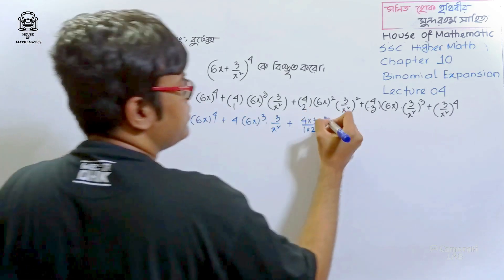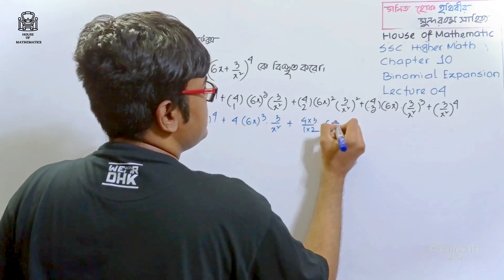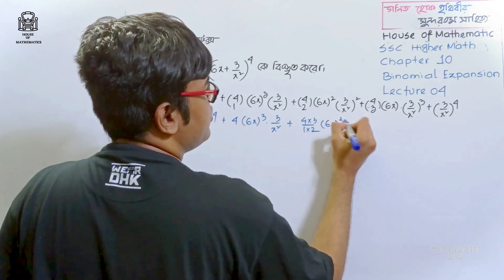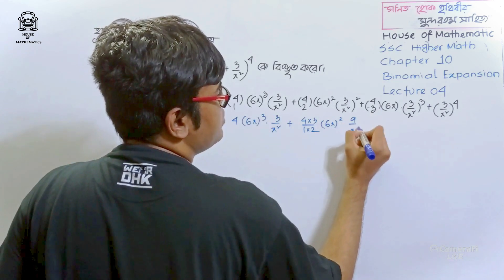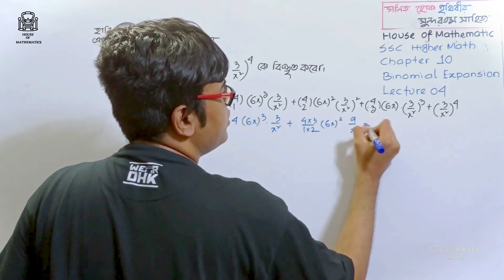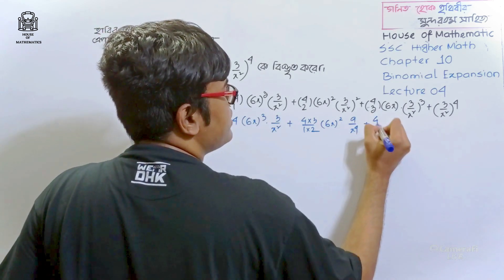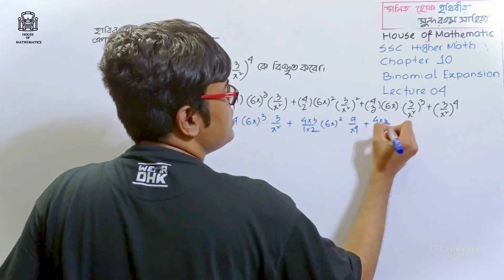Plus C(4,2)·6x squared·(9/x²)·x squared whole cubed.